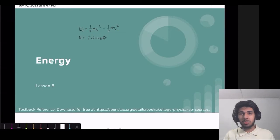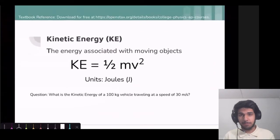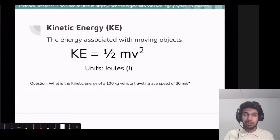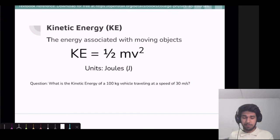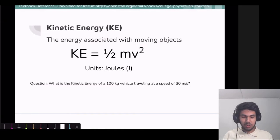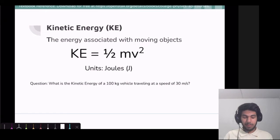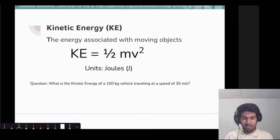To introduce energy, we're going to discuss two main types of energy. The first one is called kinetic energy. This is the energy associated with moving objects — objects that have a non-zero velocity, things in motion. Our formula for it is KE, which is what we abbreviate kinetic energy to be: KE equals one-half mv squared. So m is the mass of the object and v is the velocity of the object. The units for kinetic energy are in joules — basically all forms of energy have units in joules. We use this equation when we have an object in motion.